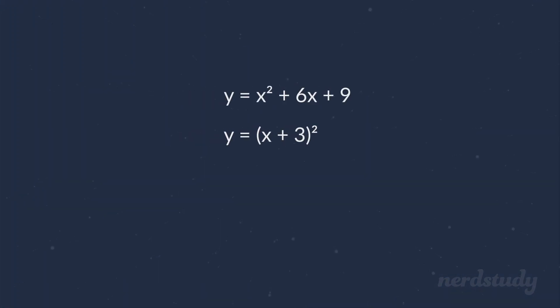I want you to notice something here. Notice how when you factor a perfect square trinomial, this number here will be double this number. And when you square this number, you would get this number. Why is this the case?